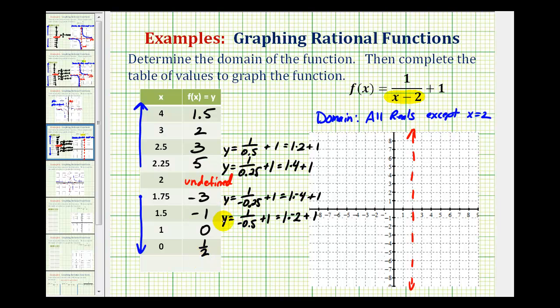Let's go ahead and plot these points and see if we can sketch our graph. So we have four, one point five, that's going to be here. Three, two, be here. Two point five, three, be here. Two point two five, five, so as we get closer and closer to this vertical asymptote, y starts increasing faster, maybe somewhere in here.